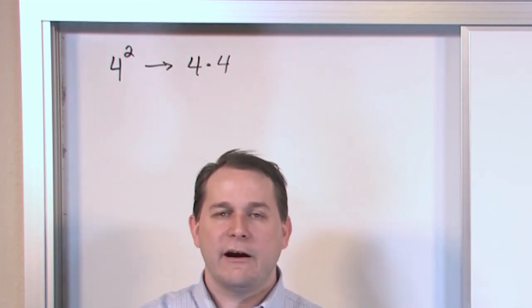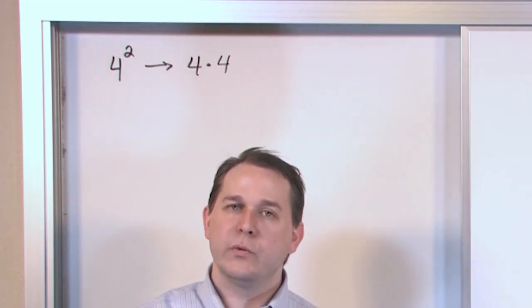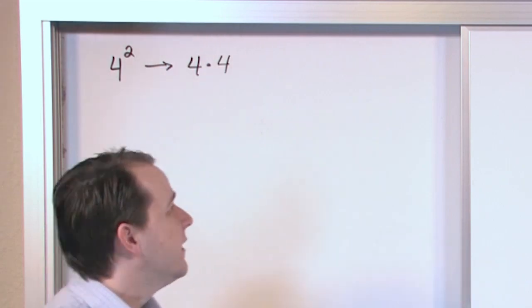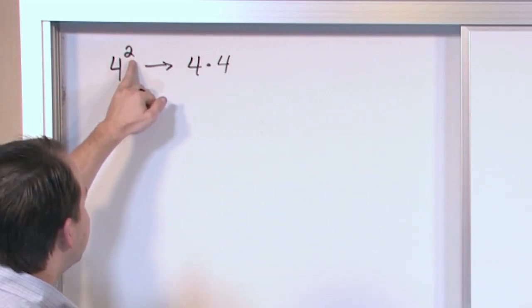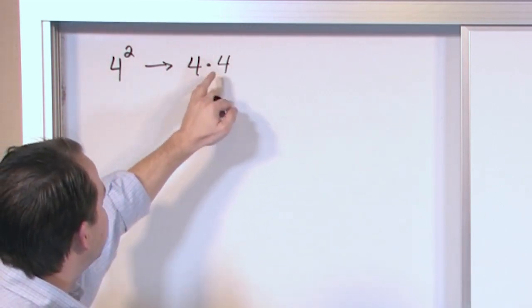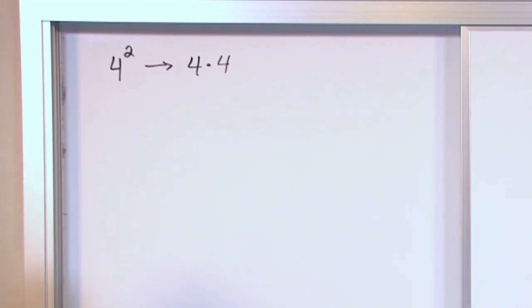So for those of you that are scared and terrified of algebra, you should look at this and realize it's something you can understand. This two is not magical. It is just four multiplied by itself two times there. Four squared.